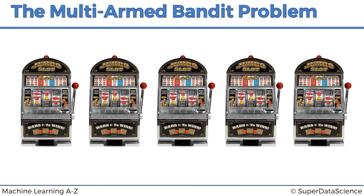A quick refresher on the multi-armed bandit problem. We have several slot machines, each one of them has a distribution behind it, d1 to d5. We don't know what these distributions are, and we need to start playing these machines while figuring out which one has the best distribution so that we can exploit it. We need to maximize our return during the process, finding the ideal balance or trade-off between exploration and exploitation.